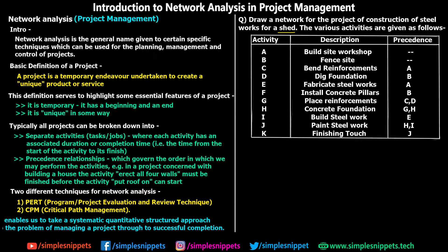The third column is precedence — which activity depends on which. For the first two activities, A and B, there is no precedence, meaning they can start immediately. For activity C, the precedence is A, which means C cannot start before A is finished. This precedence defines the chronological order — you cannot jump to a later activity before completing the earlier ones.